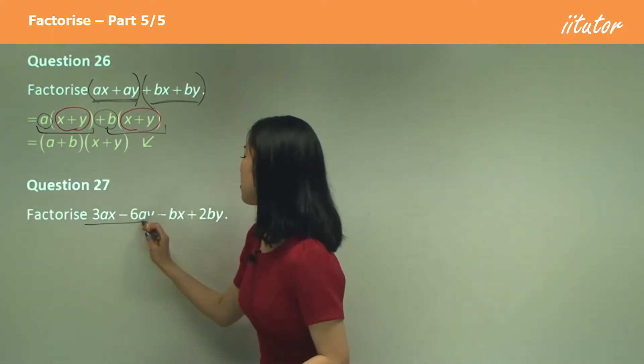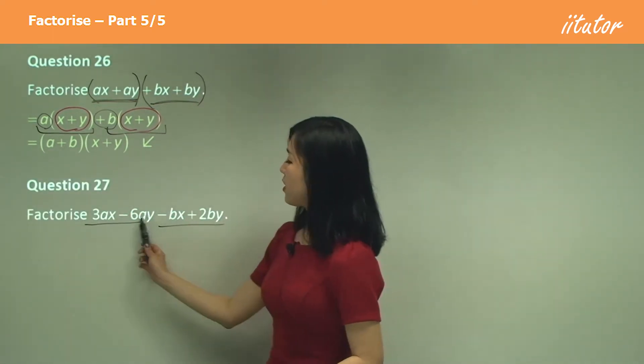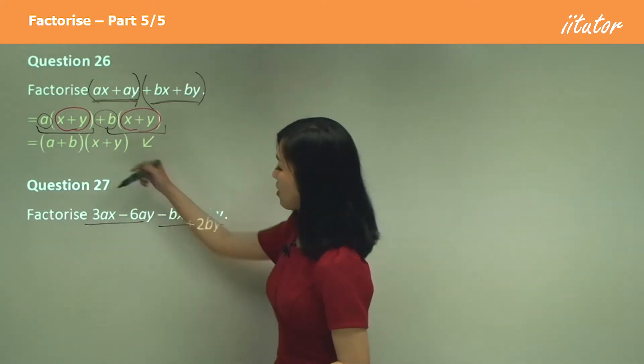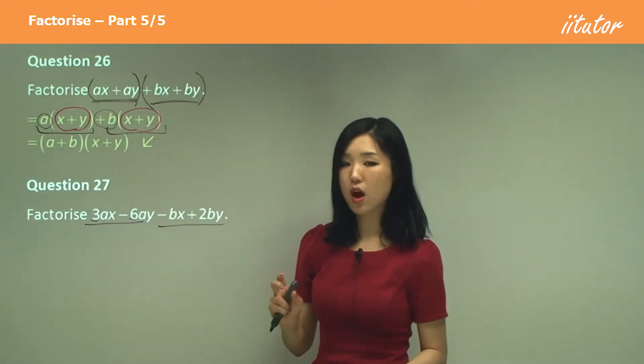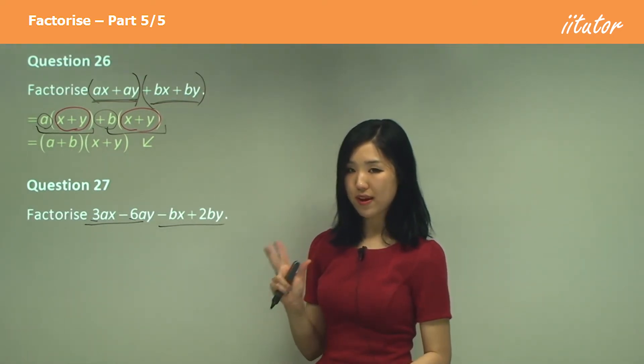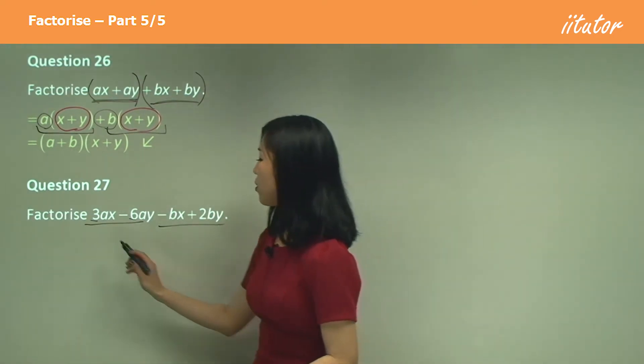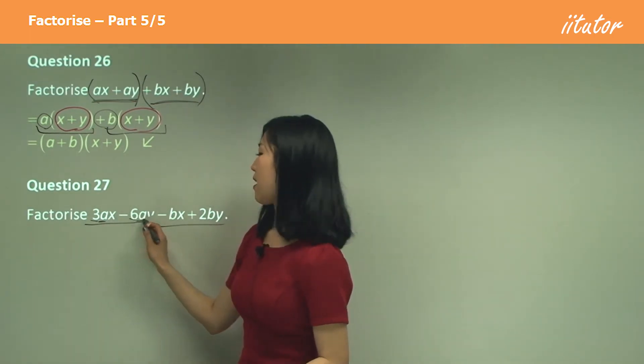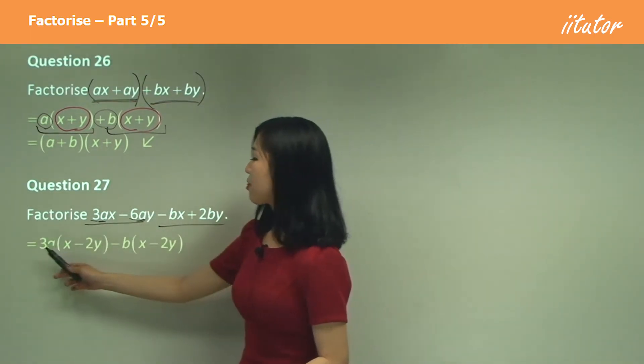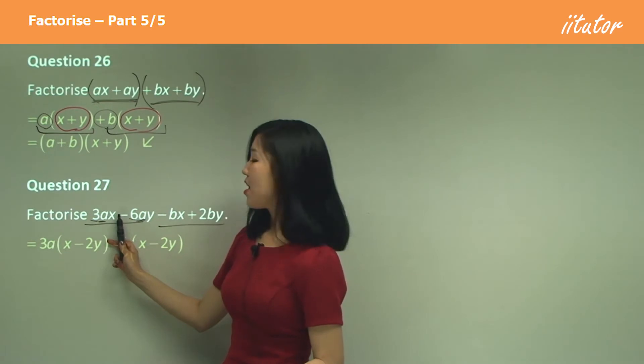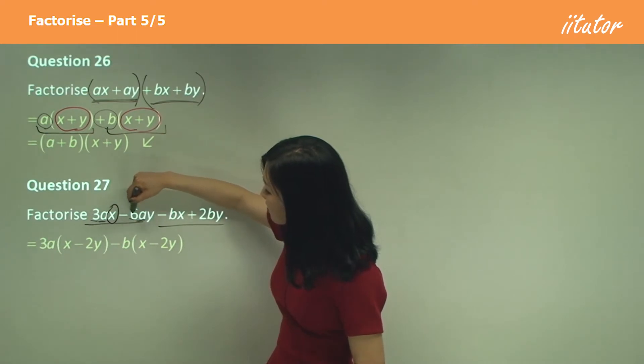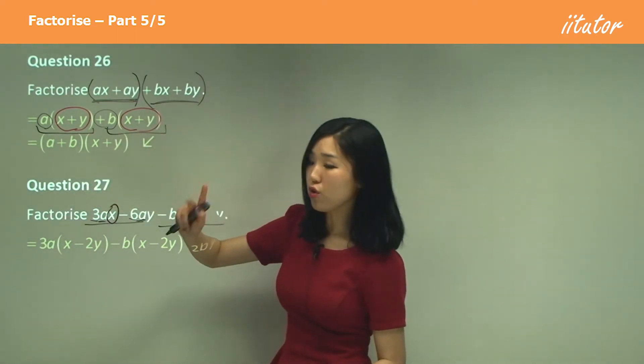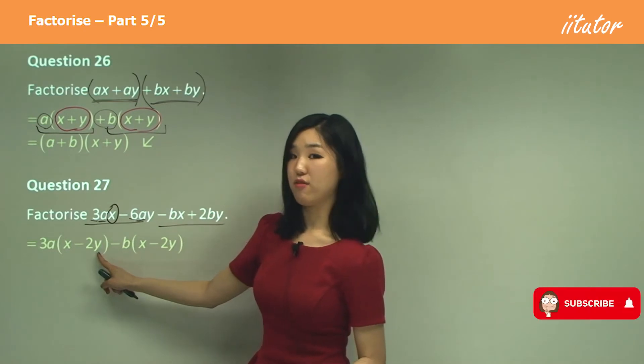I'll try these two together, this one and that one. So here, what's common? See how we have a three and we have a six? What's the common factor of three and six? It's three. And we also have a is common. So I'm going to take out three a here. If I take three a here, we'll just have x left over here. And because six divided by three is two, I'll have two y left over.